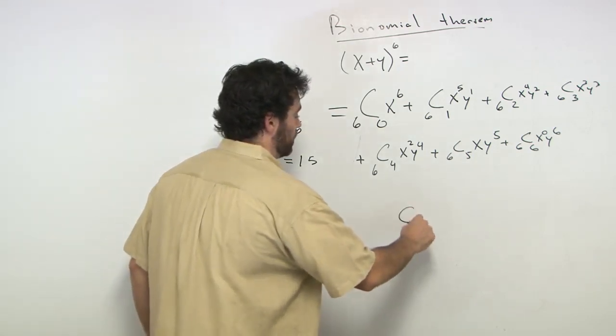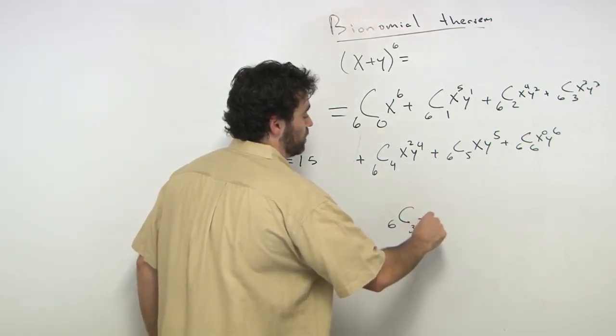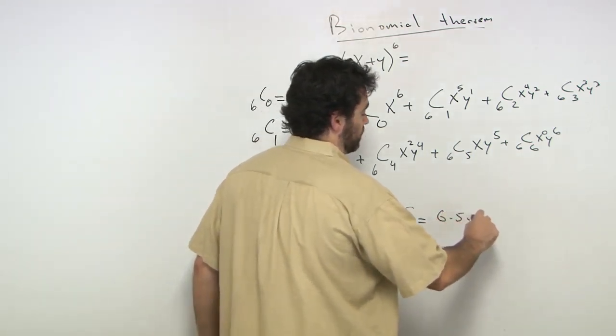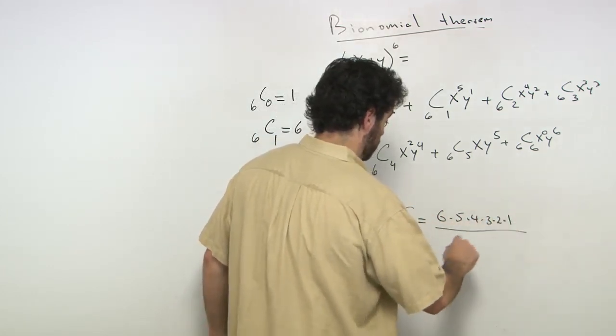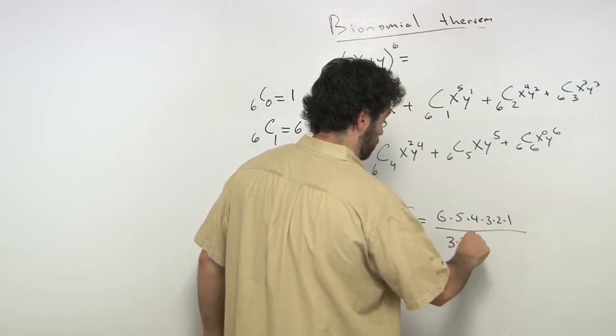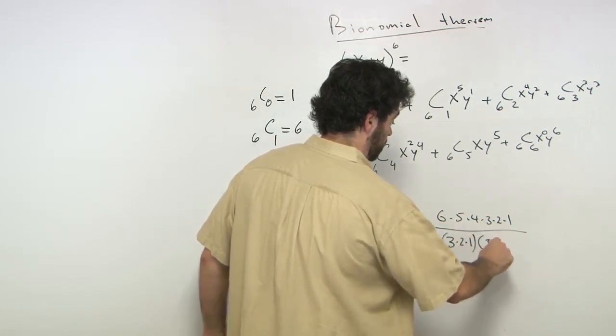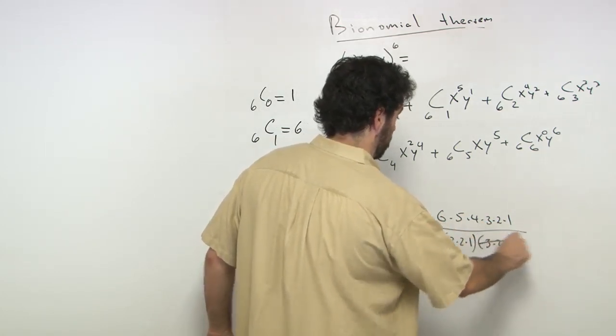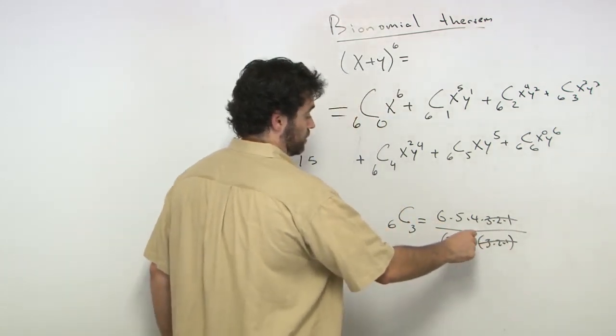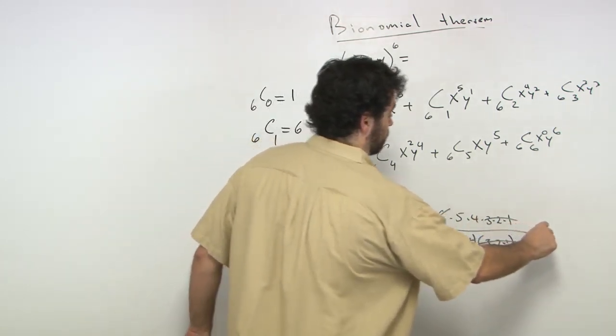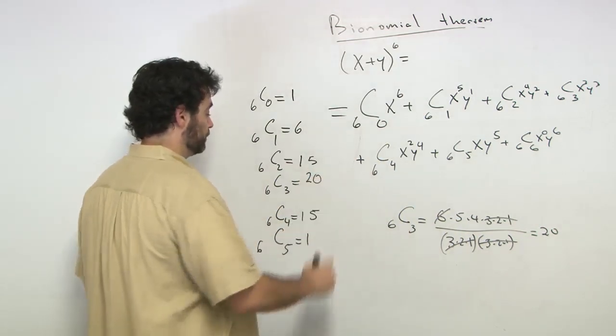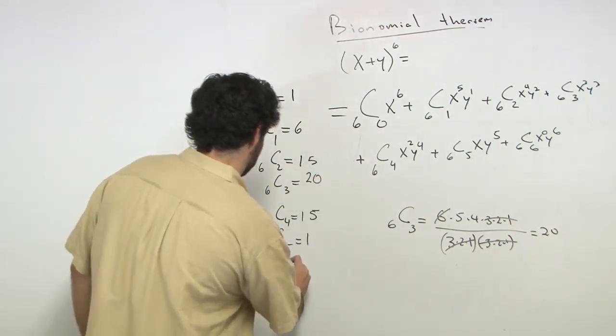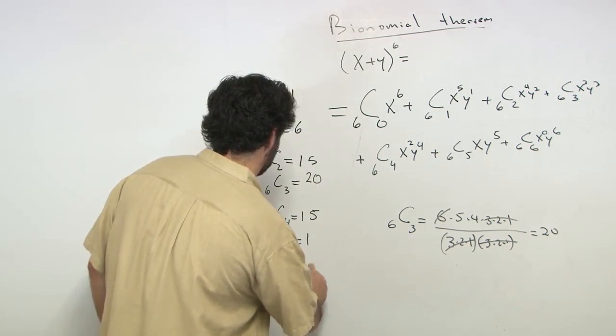And that gives us 6c3, the only one we left to work out. So we'll say that 6c3 is equal to 6 times 5 times 4 times 3 times 2 times 1, over 3 times 2 times 1, times 3 times 2 times 1. 6 cancels, so we're just left with 20. So 6c3 is 20, and the last one we did was 6c6, which is also 1.